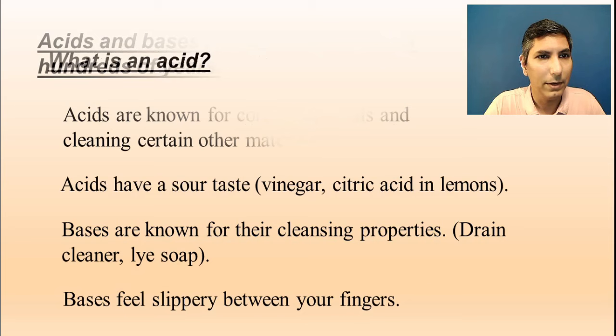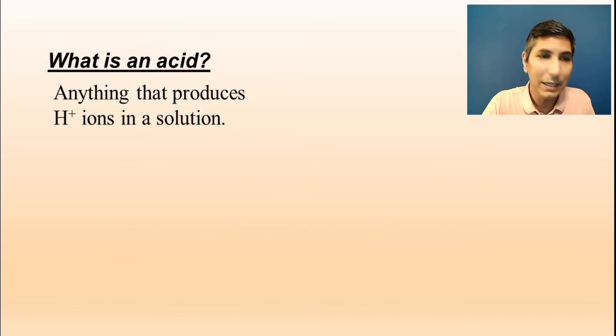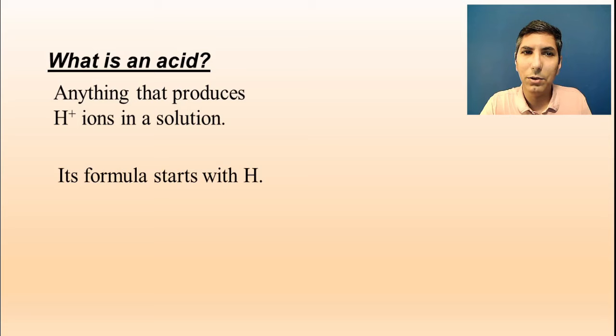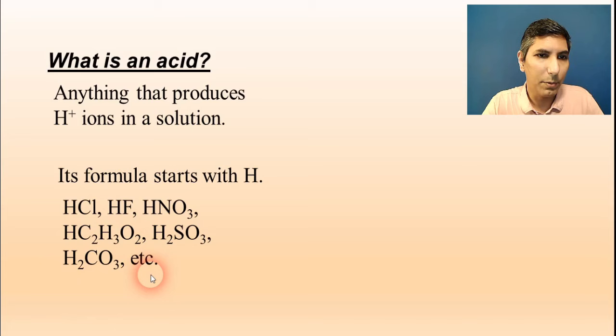Now, when we ask chemically, what is an acid? Well, it's basically anything that produces hydrogen ions in a solution. So if you're looking at the chemical formula, the easiest way to recognize an acid is just by looking at its formula, and you'll see that it starts with hydrogen. We have formulas that start with hydrogen, and they're all acids.